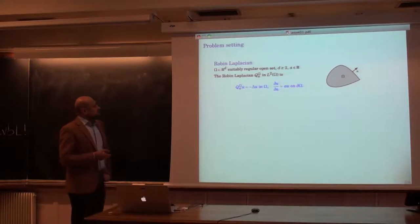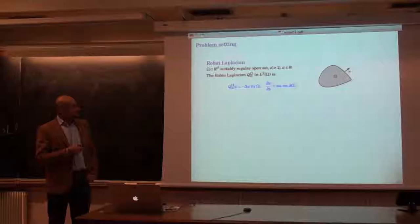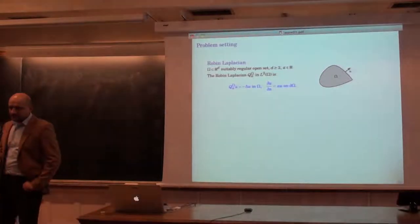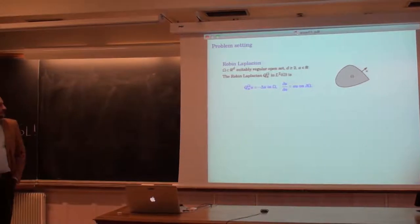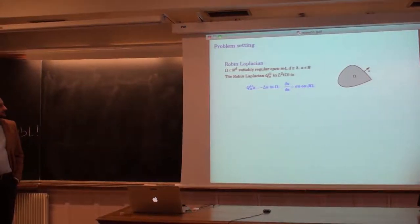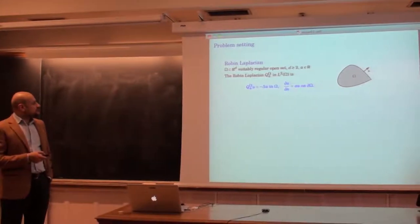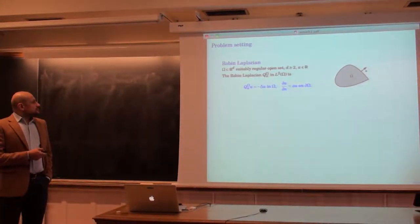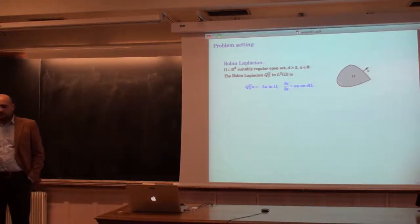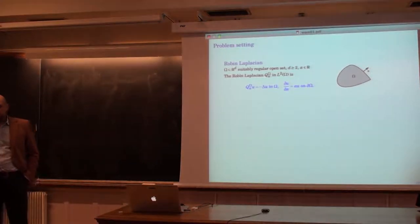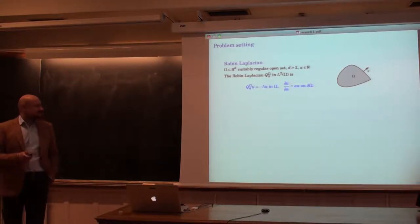This talk is dedicated to the spectral study of the Robin Laplacian. We have a small discussion of Robin, who was a French mathematician. In alternative language, the Robin boundary condition is called sometimes the boundary condition of the third kind, by analogy with the first kind, which is Dirichlet, and the second kind, which is Neumann.